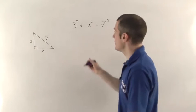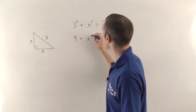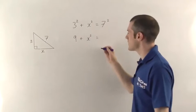So work out what you know. So 3 squared is 9, and 7 squared is 49.